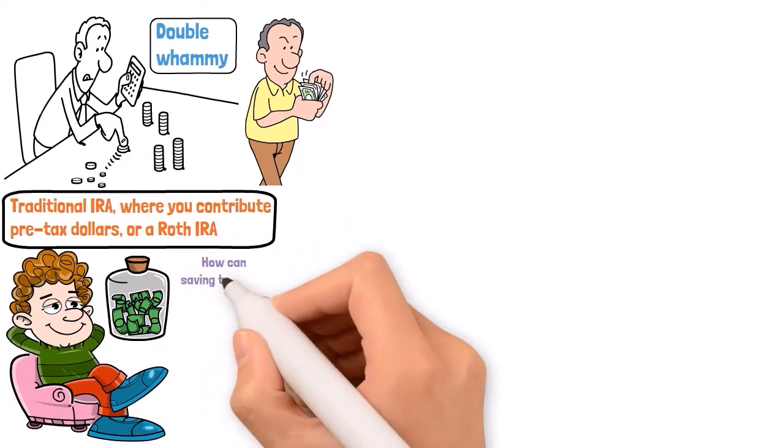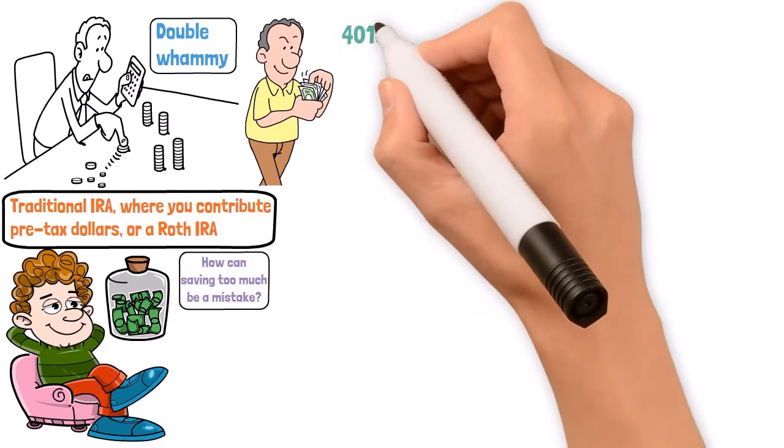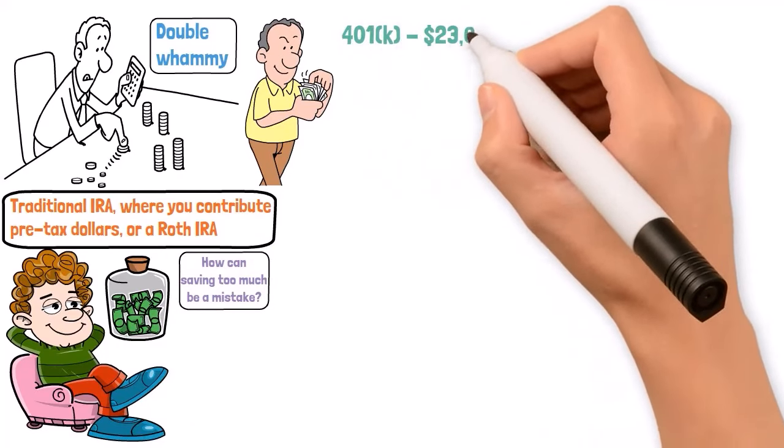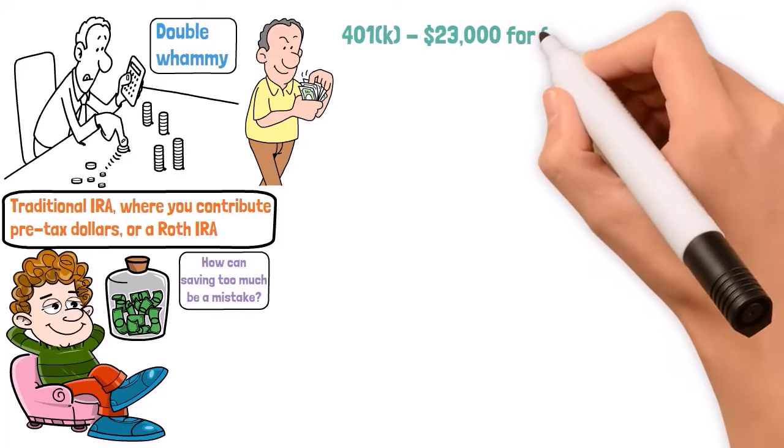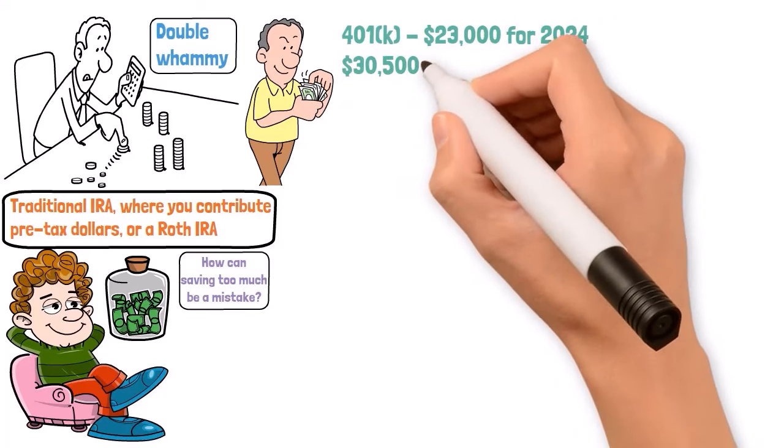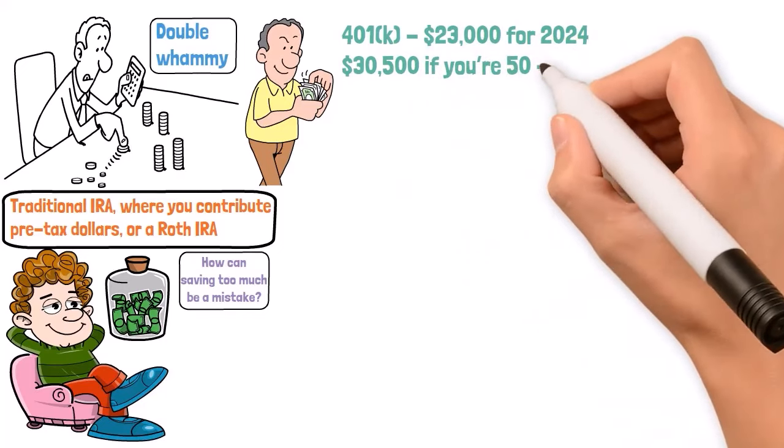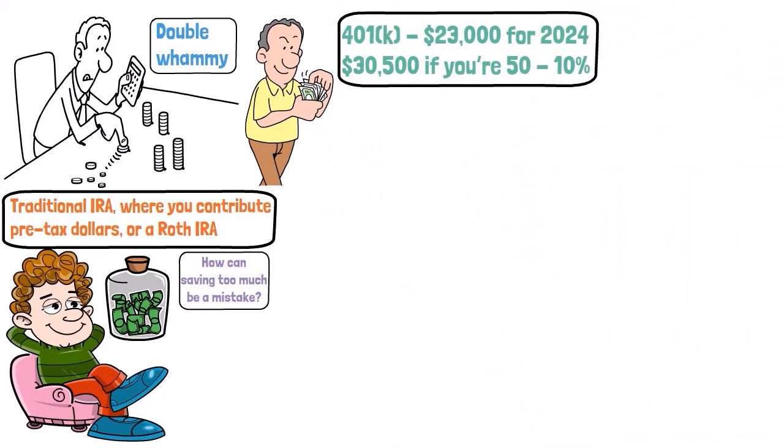You might be thinking, how can saving too much be a mistake? Well, it's all about balance. The IRS caps 401k contributions at $23,000 for 2024 or $30,500 if you're 50 or older. Exceed these limits and you could face a 10% penalty for early withdrawal, plus get double taxed. Ouch.